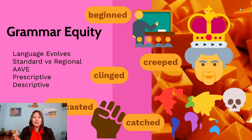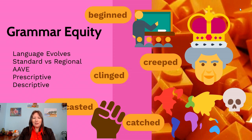That said, when we talk about grammar we have to emphasize that grammar evolves and language evolves. The way we speak now is not the way we spoke a hundred or thousands of years ago. When we think about English, it's important to understand that using and enforcing standard English has often been used as a tool of colonialism, and English is used around the world in many different ways.